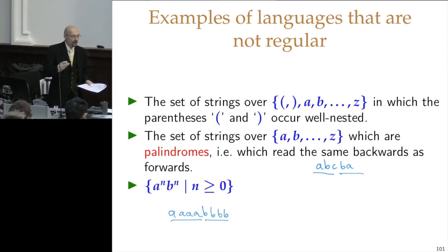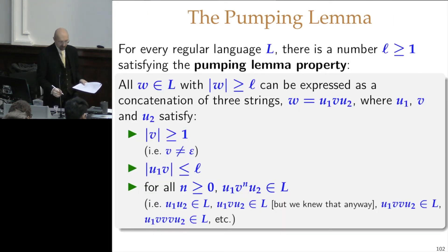But this is intuitive, it's somewhat convincing, but it's not quite a formal argument. And in order to make a formal argument that a language is not regular, then we can use this pumping lemma. The pumping lemma is something that has a complicated nesting of quantifiers, so we have to peel things off in stages. But the idea here is that for every regular language L, there exists a number ℓ greater than or equal to one, which is related to the memory capacity of the automaton that recognizes L.